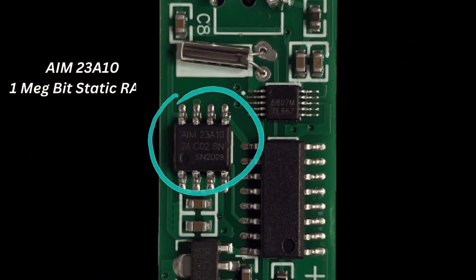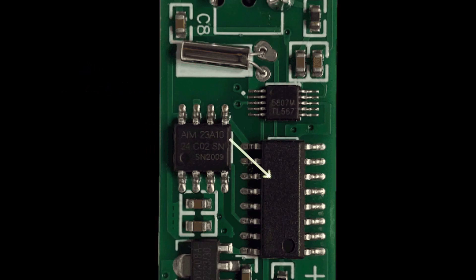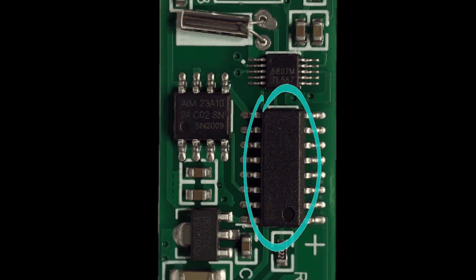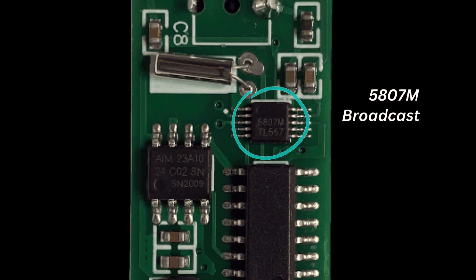Next to that we've got an AIM-23810. And the microcontroller utilizes this for storing its data. Now we have got the main microcontroller itself. But unfortunately it's got no identification marks on it. So I can't say an awful lot about it. And then finally we have this. This is the 5807M. It's the broadcast FM radio tuner.